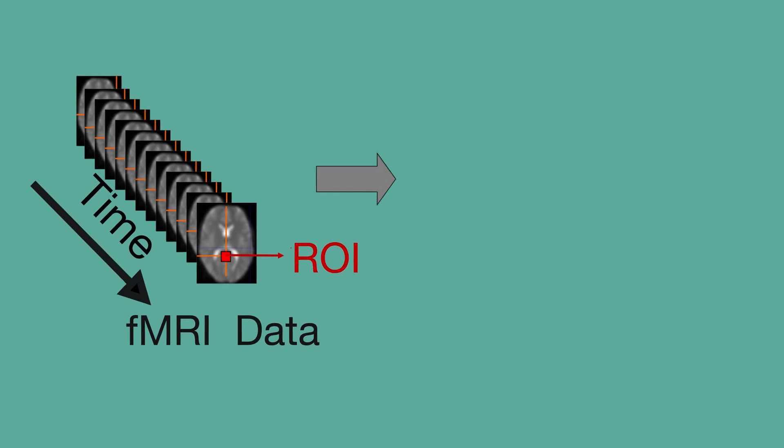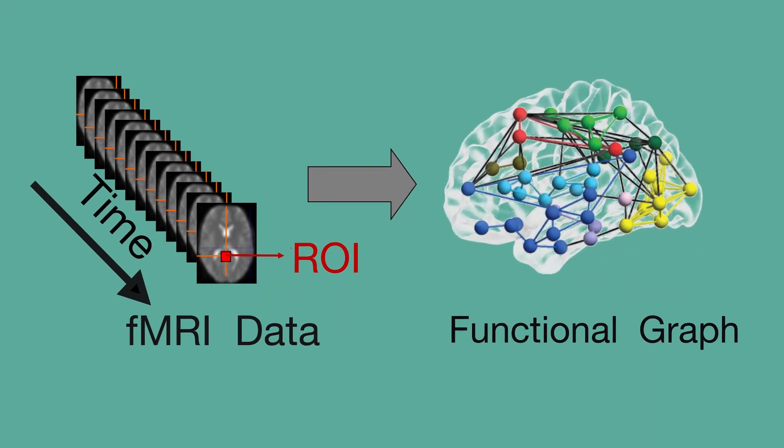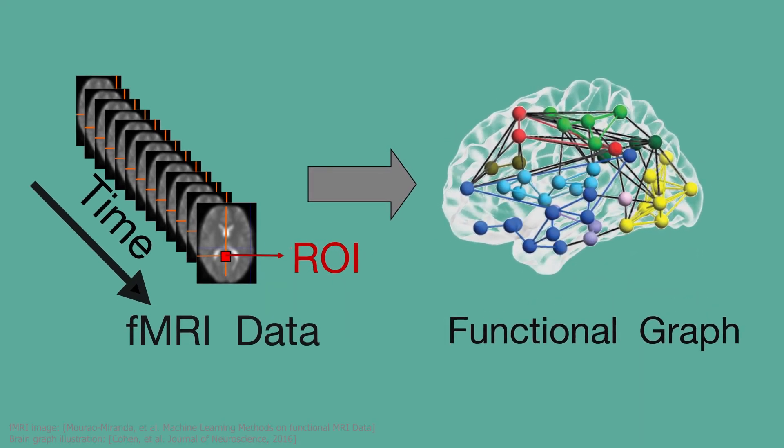fMRI data are often studied as brain graphs, or connectomes, where nodes represent regions of interest in the brain and edges represent correlation in the functional activation time series between pairs of regions. Brain graph analysis has proven to be a powerful tool in the neuroscience field.